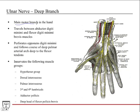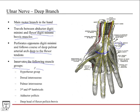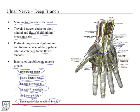The deep branch of the ulnar nerve is the main motor branch in the hand. It travels between the abductor digiti minimi and flexor digiti minimi muscles, perforates the opponens digiti minimi, and follows the course of the deep palmar arterial arch, traveling deep to the flexor digitorum profundus and superficialis tendons. It innervates all the hypothenar muscles, dorsal interossei, palmar interossei, third and fourth lumbricals, adductor pollicis, and the deep head of flexor pollicis brevis — a dually innervated muscle receiving input from both the median and ulnar nerves.